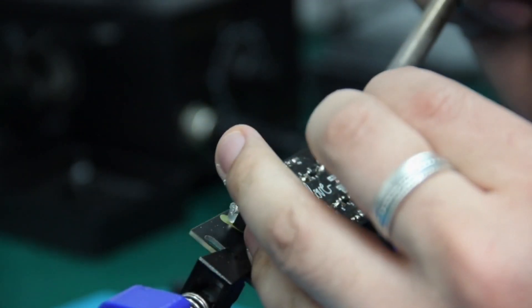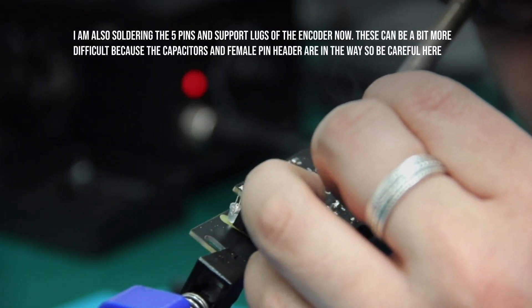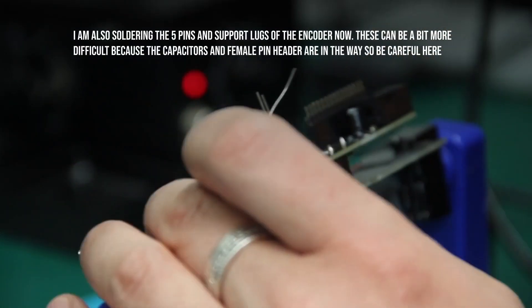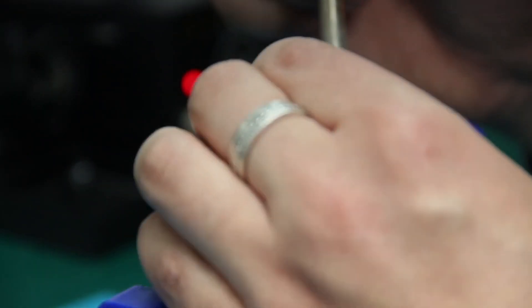I am now soldering the five pins and support lugs of the encoder. These can be a bit more difficult because the capacitors and female pin header are in the way, so be careful here.